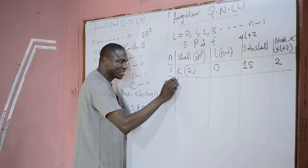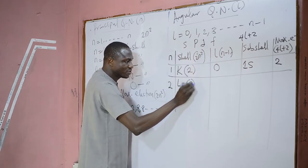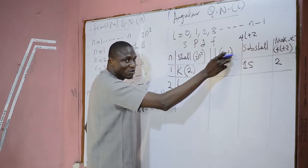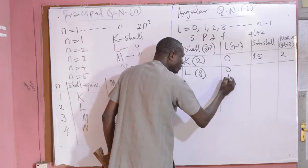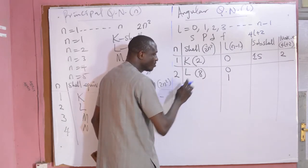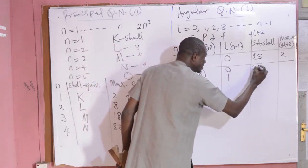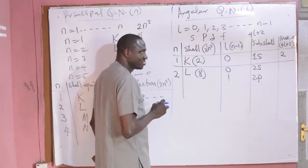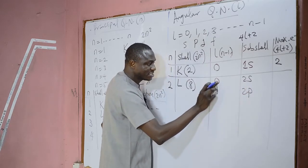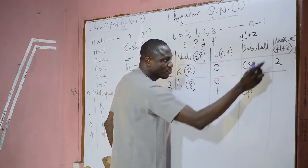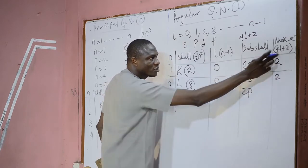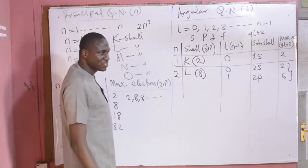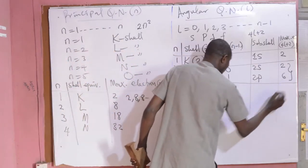When N=2, L shell, 2²×2 = 8 electrons total. How many sub-shells? 2−1=1, so we start from 0 to 1 — two sub-shells, which are 2S and 2P. When L=0, 4×0+2=2 electrons. When L=1, 4×1+2=6 electrons. Adding 2 plus 6 gives you 8, the total number of electrons in the second shell, which is L shell.